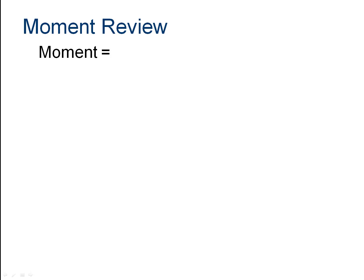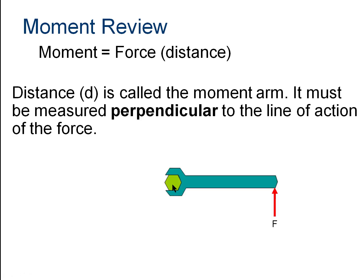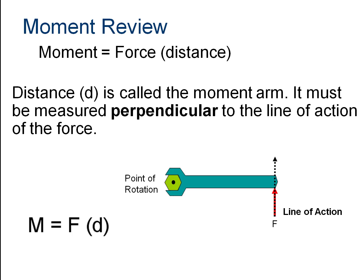We're going to talk about this in terms of moments. A moment is a force times a perpendicular distance from the point of rotation. Using the analogy of a wrench: the point of rotation is the bolt, the force is applied at the end of the wrench, and the distance is from that point of rotation to where the force acts perpendicularly. So the moment is force times distance — in our case, pounds times inches.